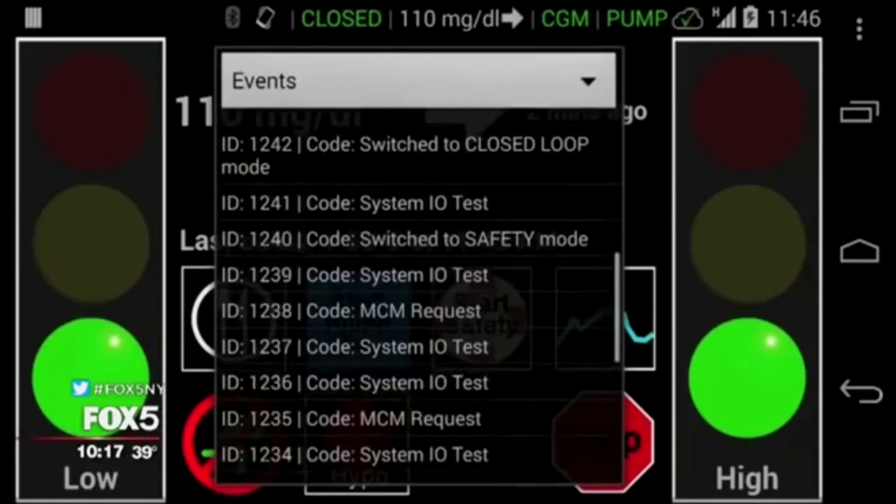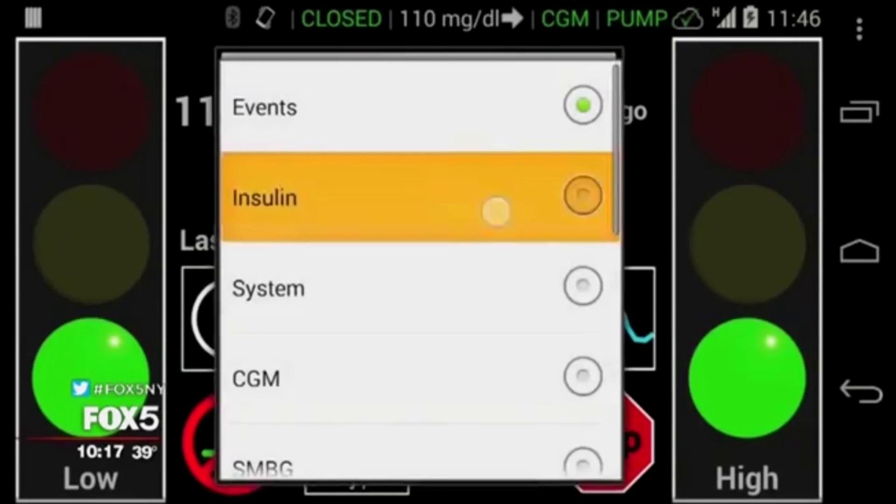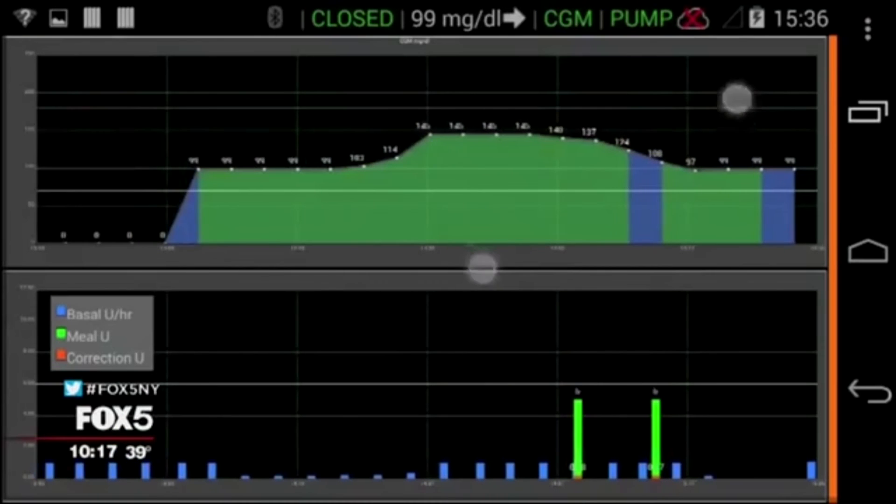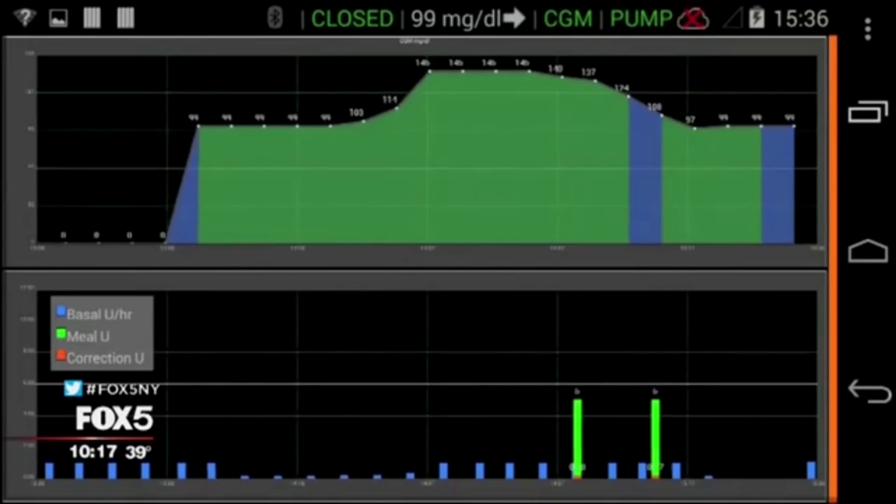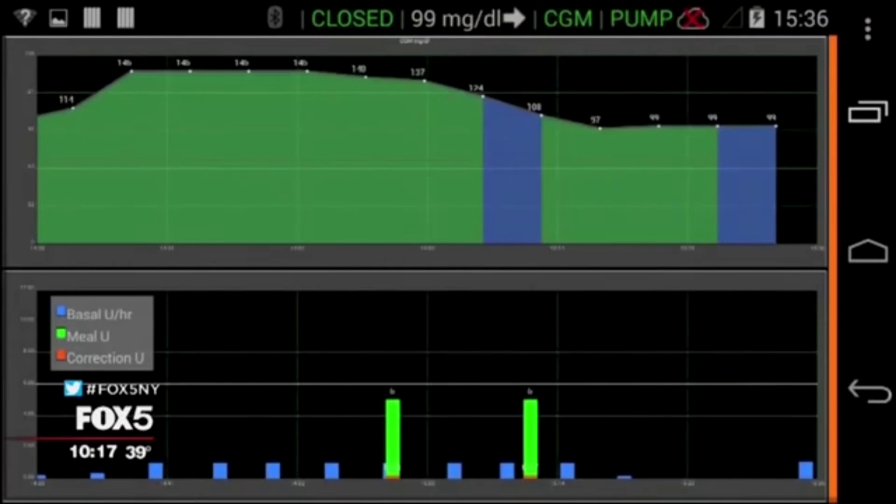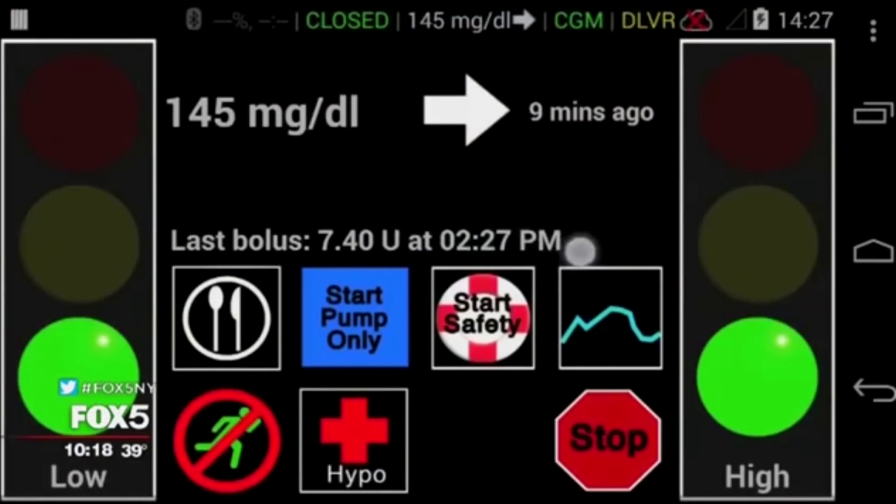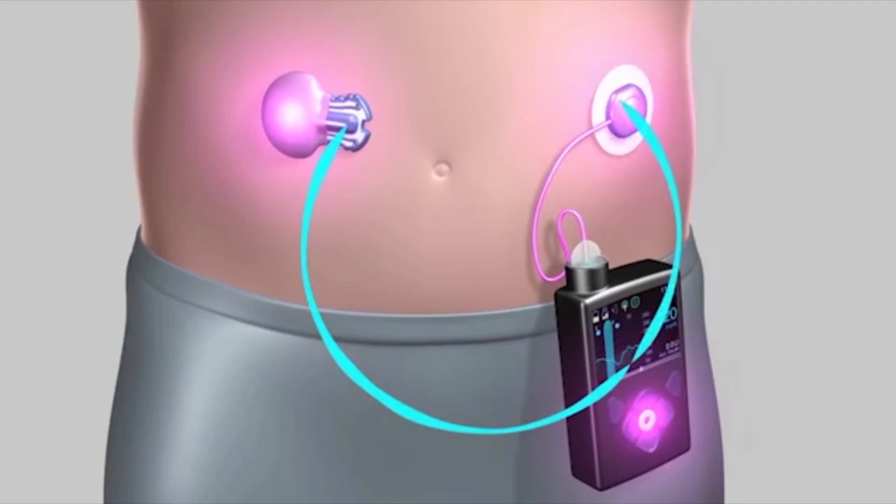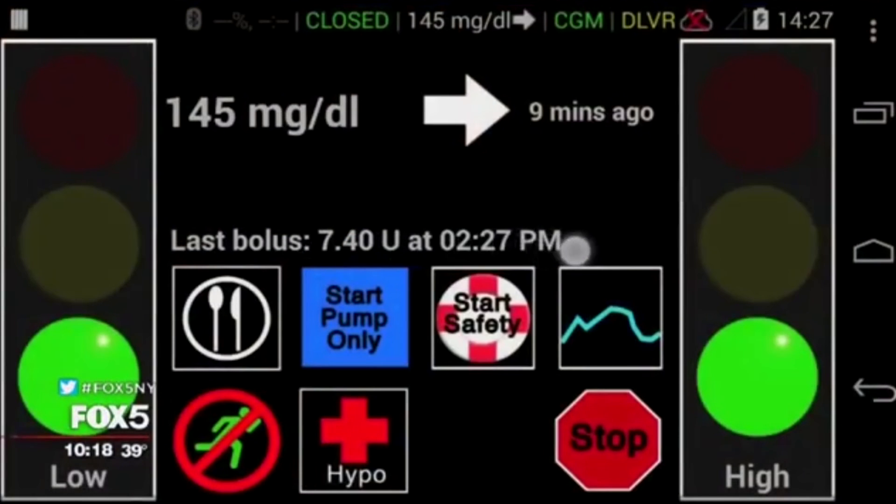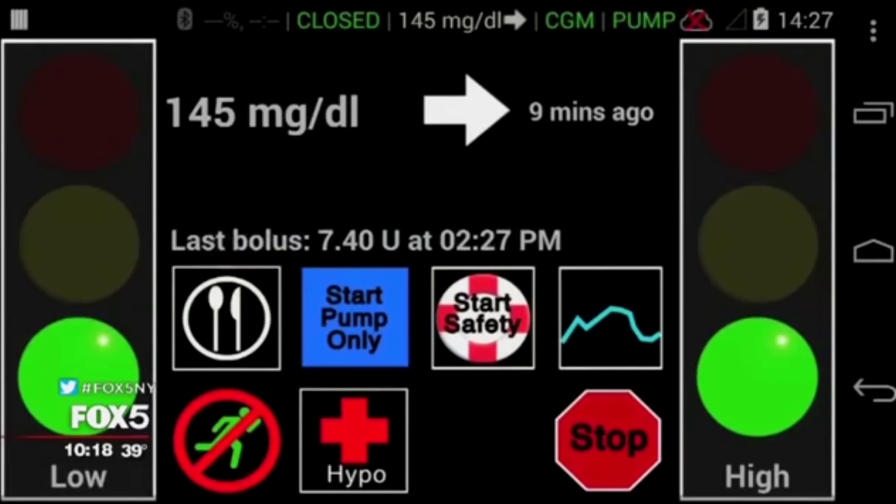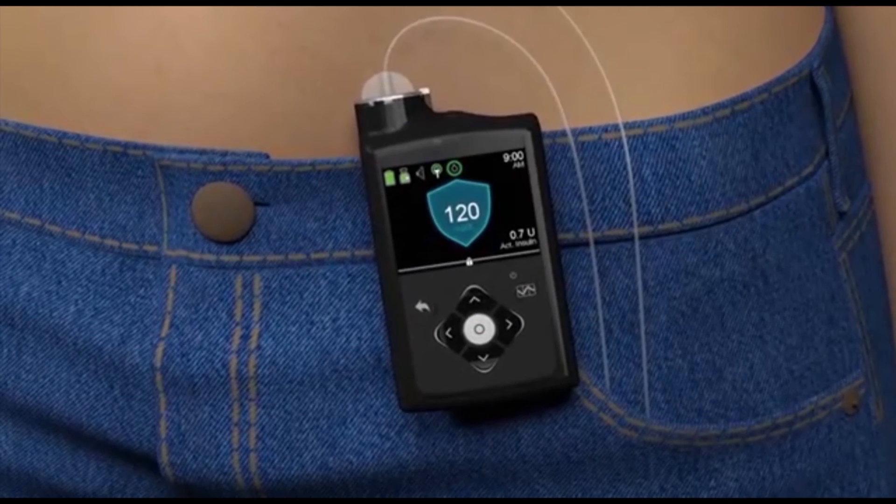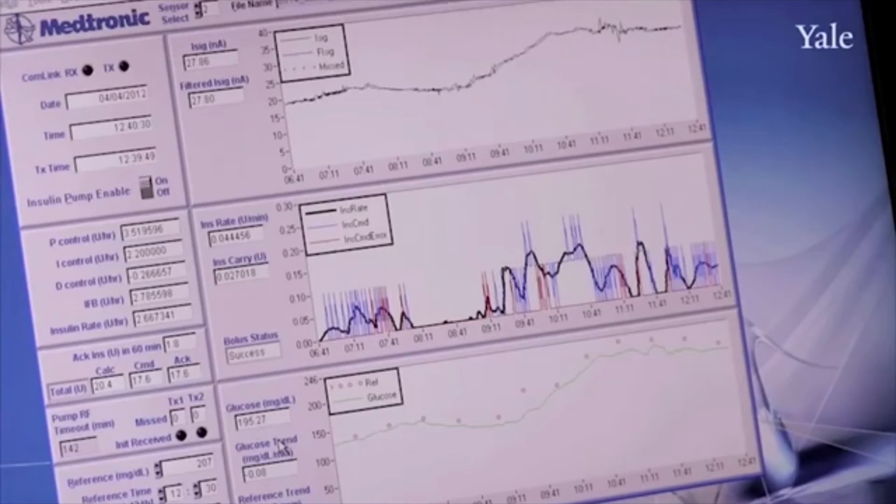A control algorithm is a software embedded in an external processor or controller that receives information from the CGM and performs a series of mathematical calculations. Based on these calculations, the controller sends dosing instructions to the infusion pump. The control algorithm can be run on any number of devices including an insulin pump, computer, smartphone or tablet.